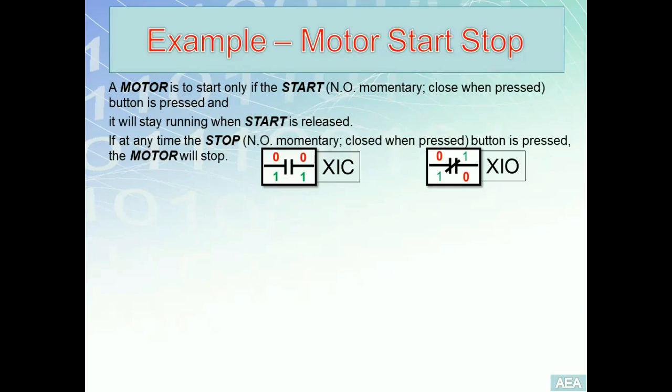From this simple observation we know that this problem includes only one output, so we can expect a ladder program consisting of only one rung that refers to the motor. The best approach we'll follow is simplifying the problem into minor sub-requirements, then translating each English requirement into binary. I'm going to re-read the problem and highlight the English terms that refer to the states of inputs and outputs.